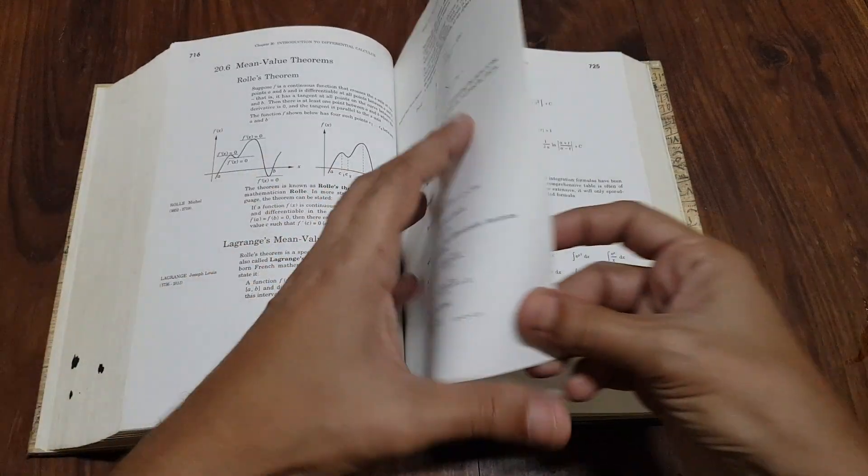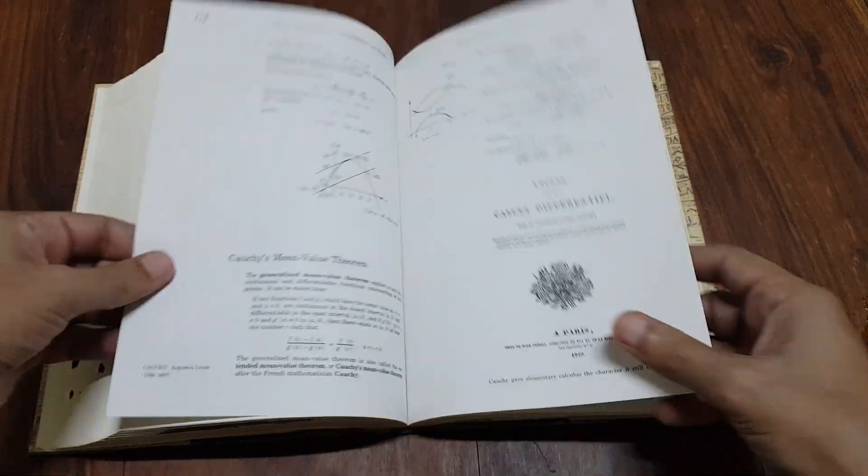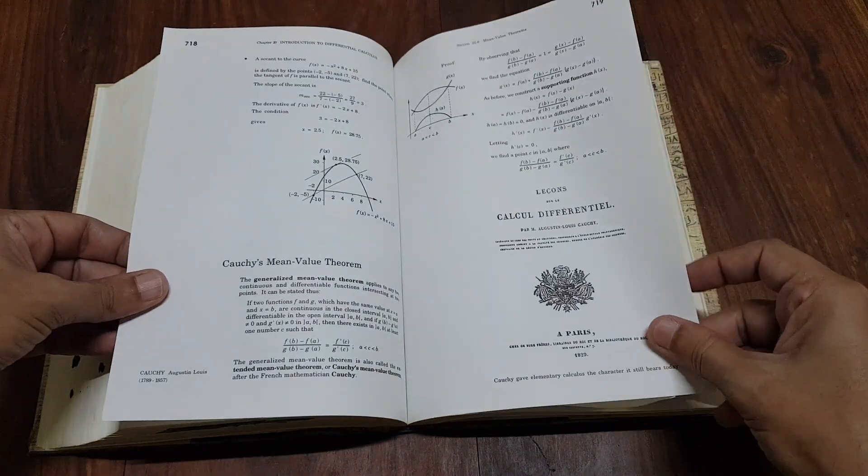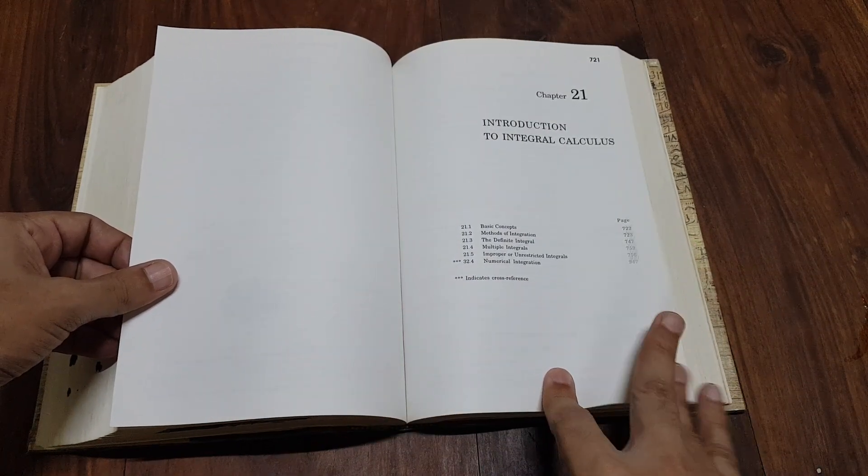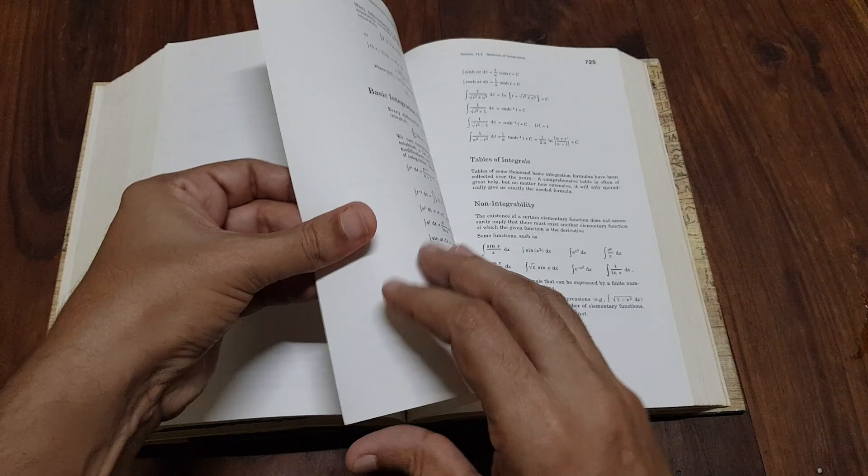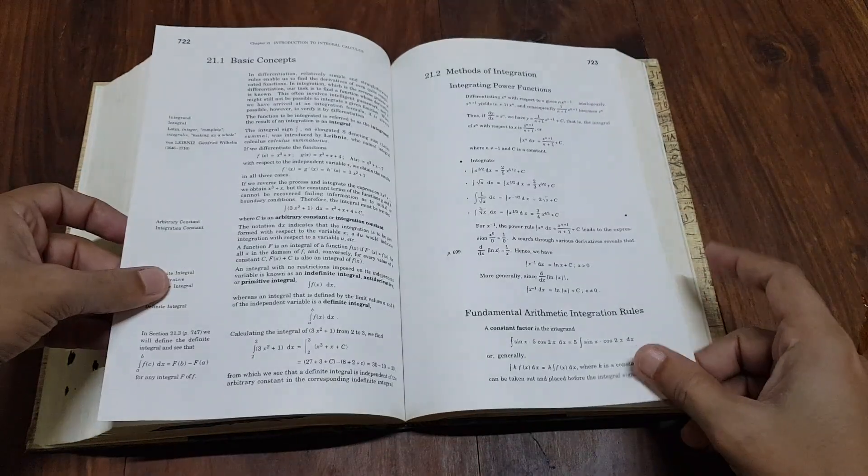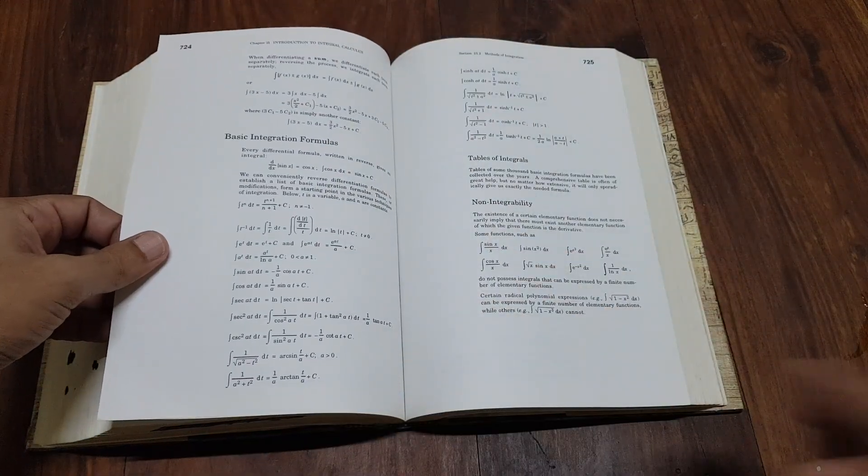Depth versus breadth. While the book covers a wide range of topics, some readers might find that it lacks depth in certain areas, especially when compared to more specialized texts. Advanced readers might find some sections too introductory or elementary.